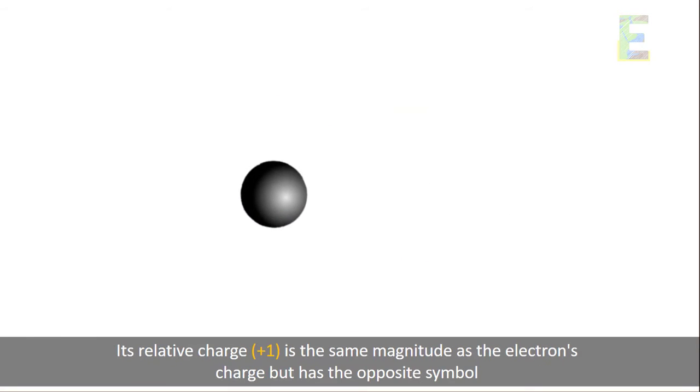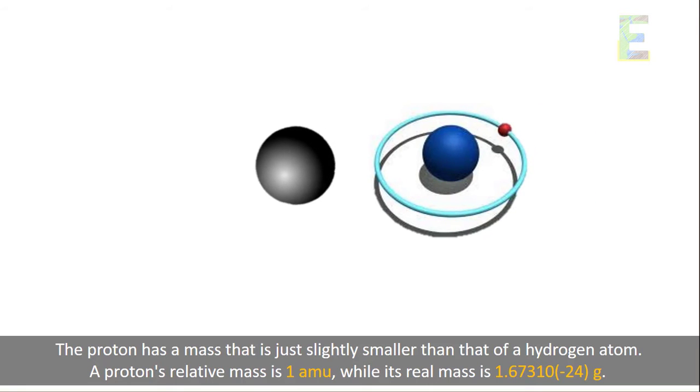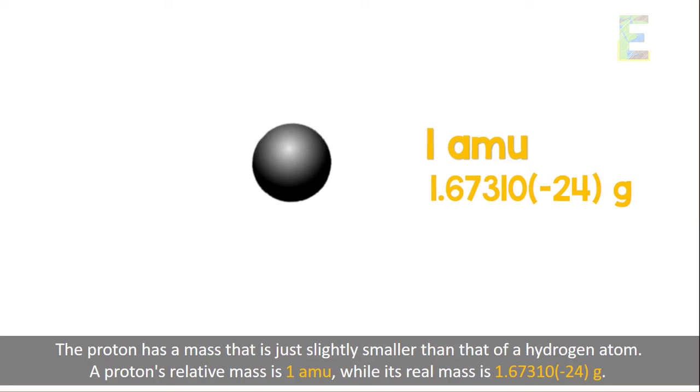Its relative charge, or positive 1, is the same magnitude as the electron's charge but has the opposite symbol. The proton has a mass that is just slightly smaller than that of a hydrogen atom. A proton's relative mass is 1 amu, while its real mass is 1.67310 times 10 to the power of negative 24 grams.